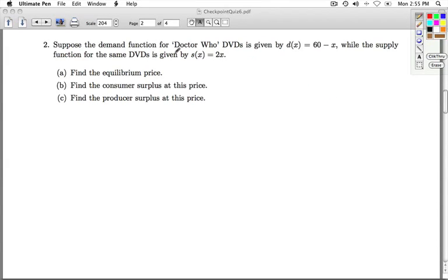Okay, number two. We're given a demand function for Doctor Who DVDs: D(x) equals 60 minus x, while the supply function is given by S(x) equals 2x.